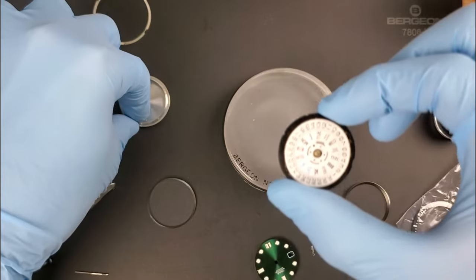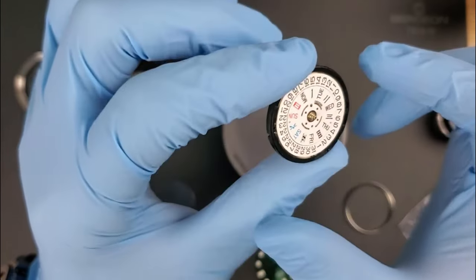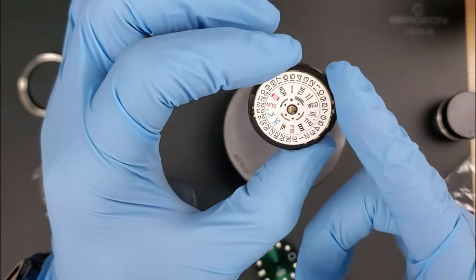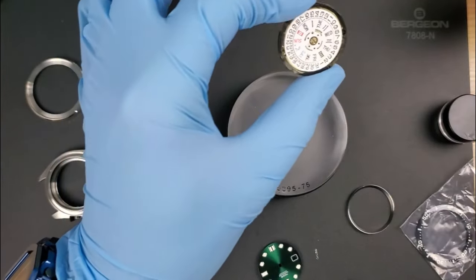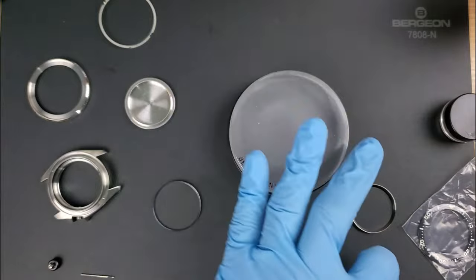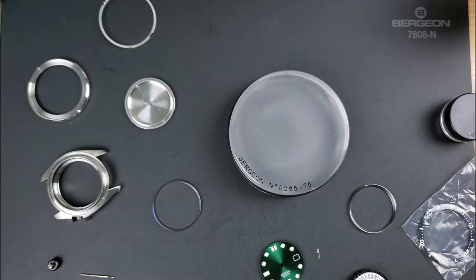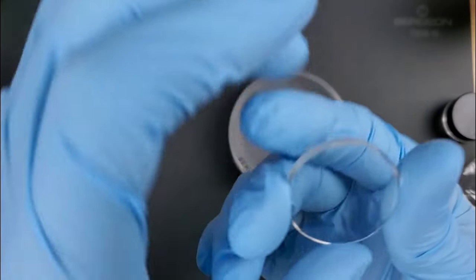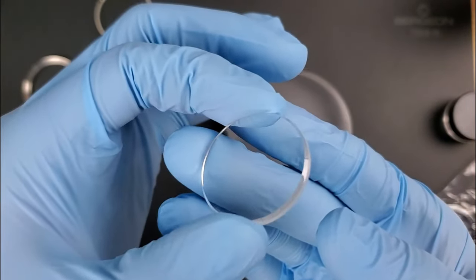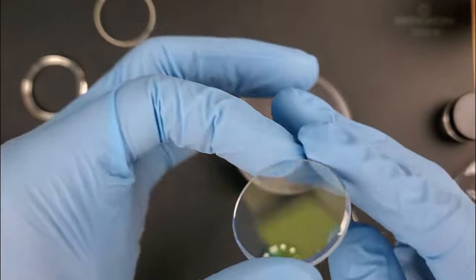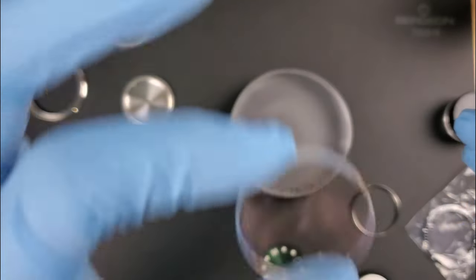This is a smaller Seiko 5 black one, but we're gonna use this movement as a test movement. It's not functional. We've got the sapphire crystal beveled edge with blue anti-reflective coating, very nice OEM dimensions.